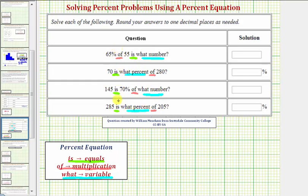If we're ever given the percent in the question, we must convert that percent to a decimal. So our first question is, 65% of 55 is what number? So for 65%, we need to convert this to a decimal, which would be 0.65.